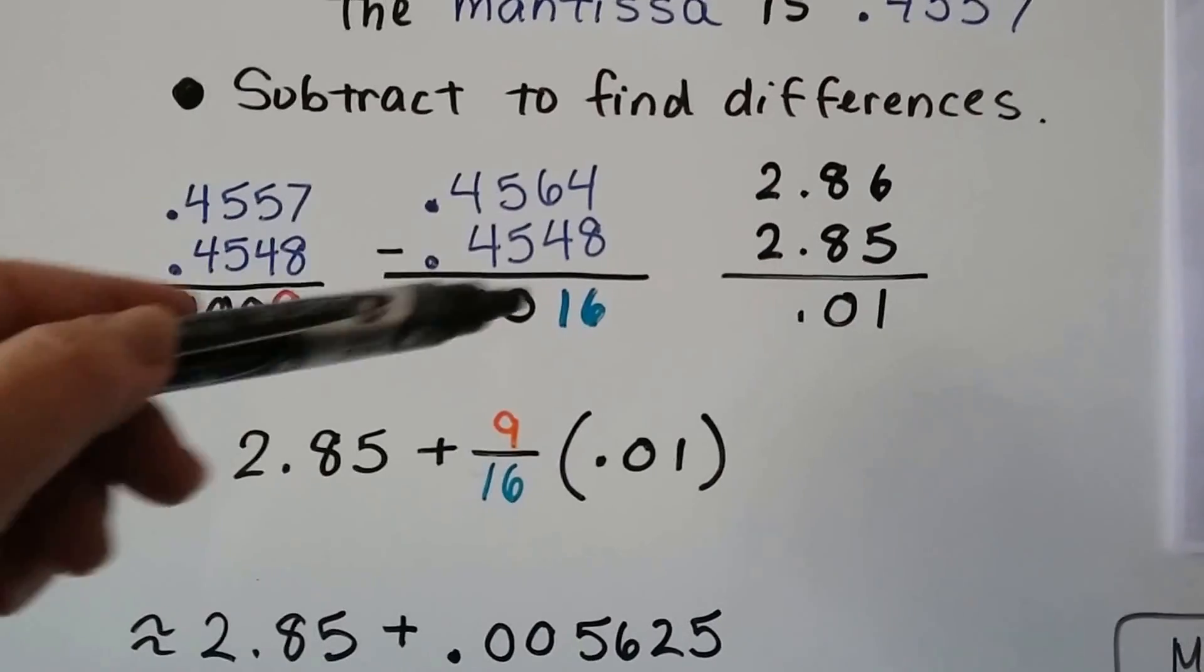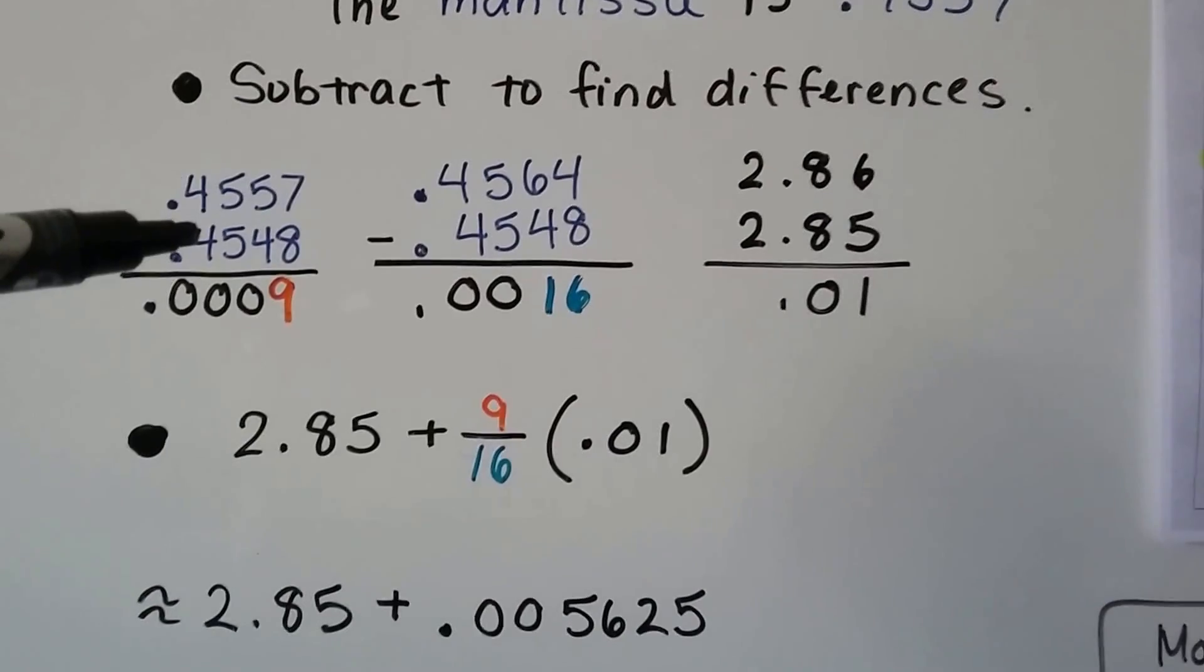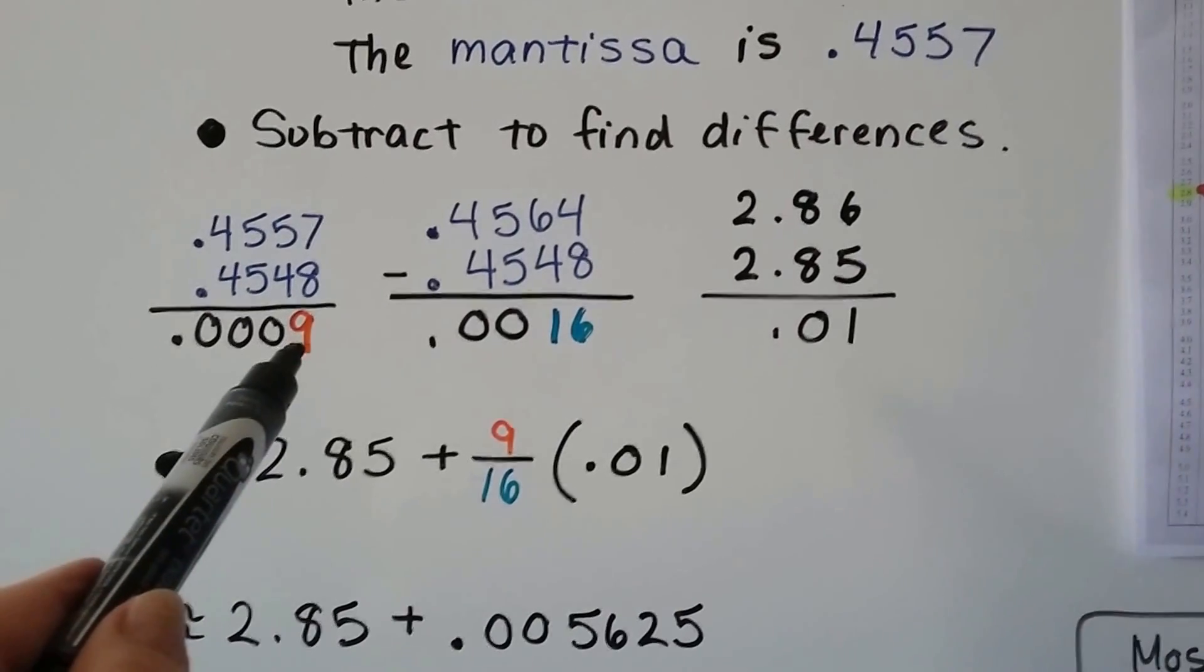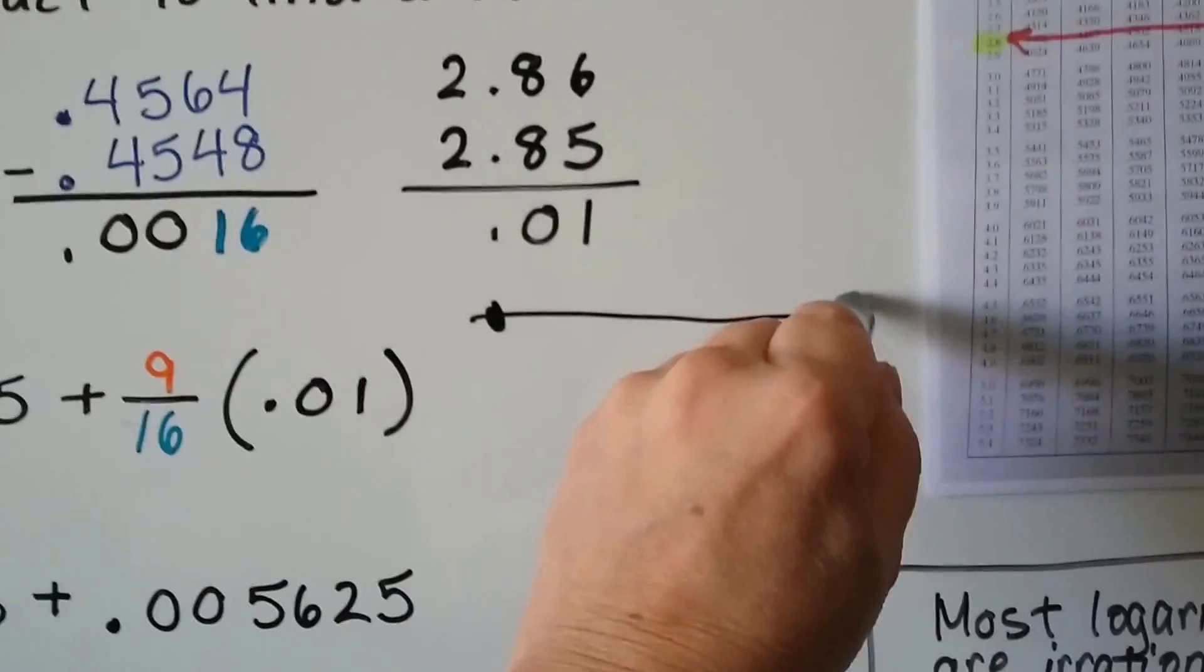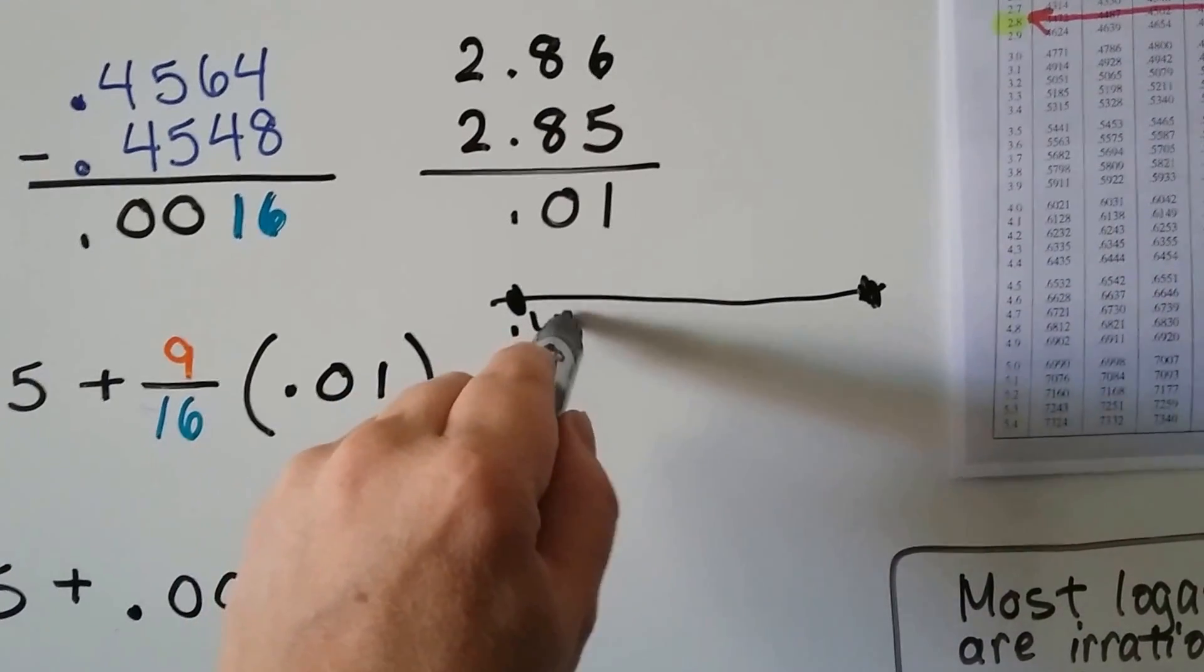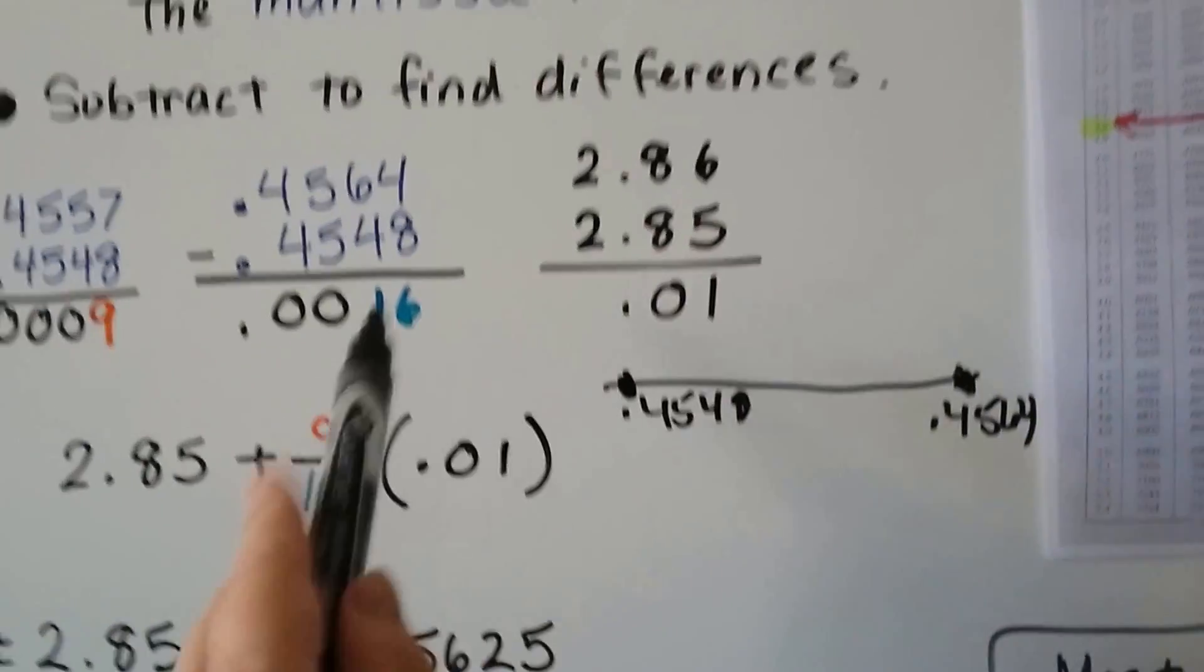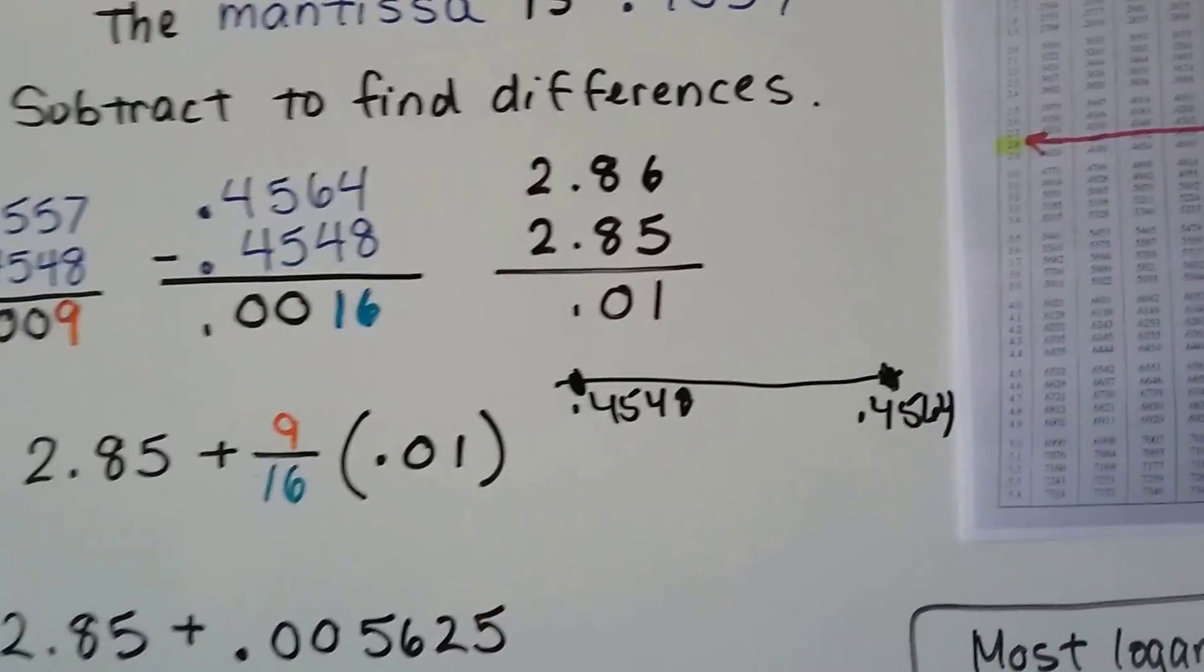And, we write down what was on the table, those two that it was in between. We find out how far our .557 is from the smaller one. It's .0009 away from the smaller value. So, if I drew that line that I was drawing, and we had the .4548 here and the .4564 here, we'd know that our .4557 is going to fall in between here somewhere.